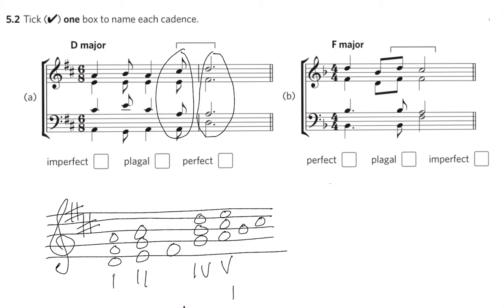Chord II has the E in it, but again it doesn't have the A or the C sharp. Chord IV doesn't have any of those notes in. Chord V contains all of those notes. And therefore the cadence is a V-I cadence, which is a perfect cadence. So tick the perfect box.